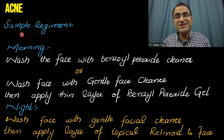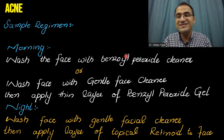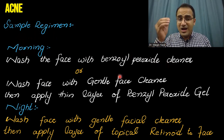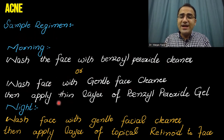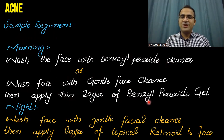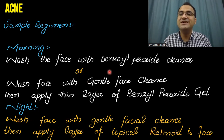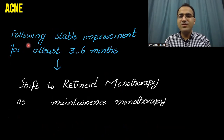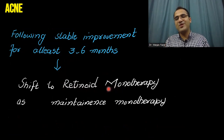Here is a sample prescription regimen for a patient with papular or pustular acne. In the morning, ask the patient to wash the face with benzoyl peroxide cleanser — there are facial cleansers that contain benzoyl peroxide — or wash with gentle face cleanser and apply a thin layer of benzoyl peroxide gel. At night, wash the face with gentle facial cleanser and apply topical retinoid. If the patient shows stable improvement for at least three to six weeks, you can step down to retinoid monotherapy as maintenance.